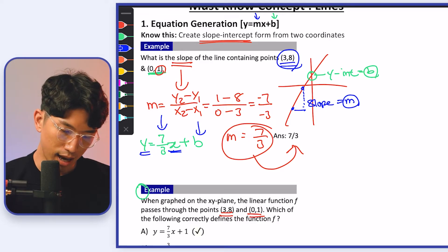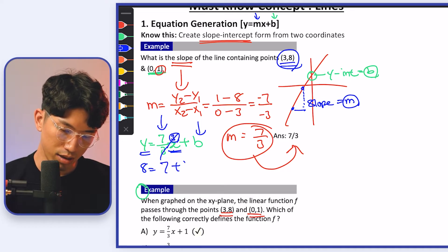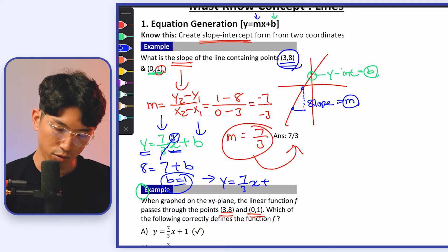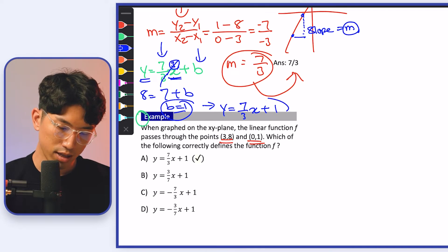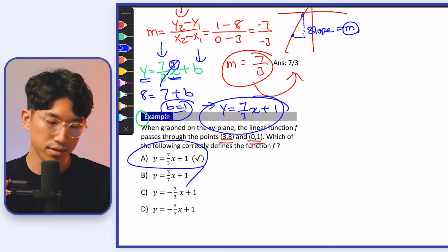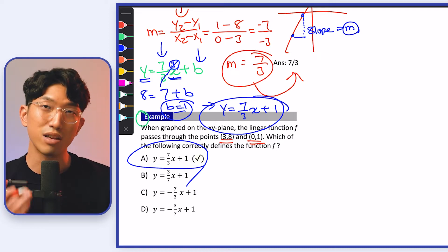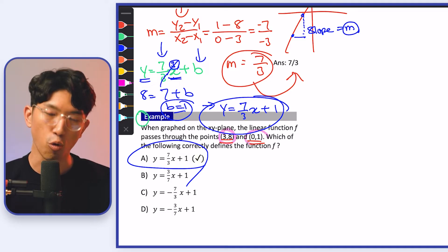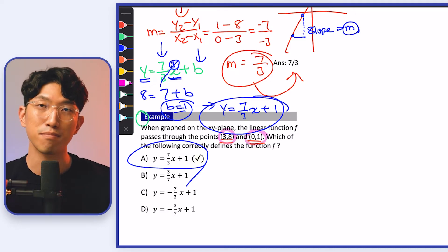Plugging it in: 8 = (7/3)(3) + b. The 3's cancel, giving us 8 = 7 + b, so b = 1. Our final equation is going to be y = (7/3)x + 1, which means our answer is choice A. The main takeaway is you want to have the ability to generate y = mx + b using the two coordinates provided by the question.